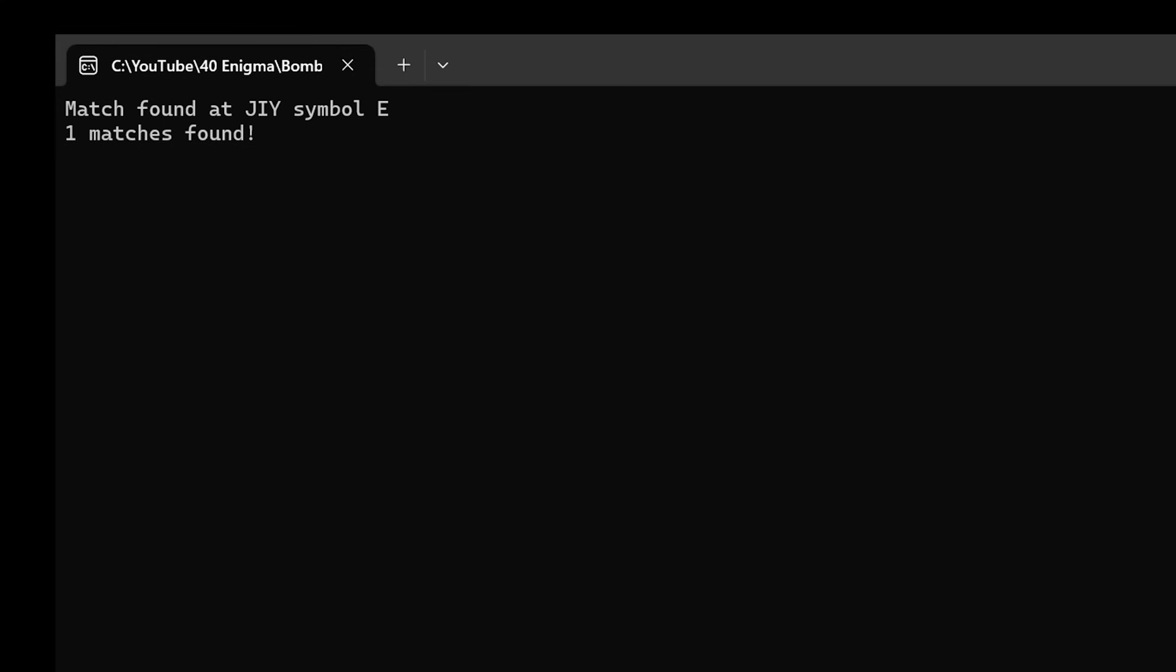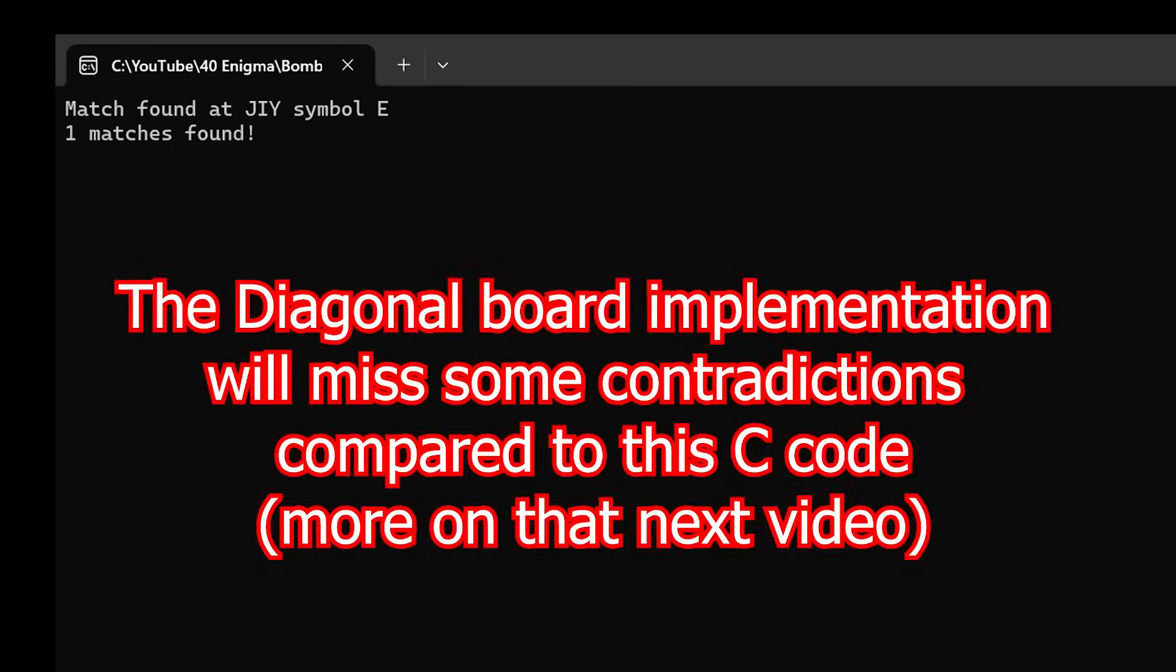This algorithm should pick up all plugboard mapping contradictions, but the diagonal board will miss some, particularly if the contradiction occurs in a letter not within one of the loops. That said, we only really need one contradiction to reject any given rotor setting.